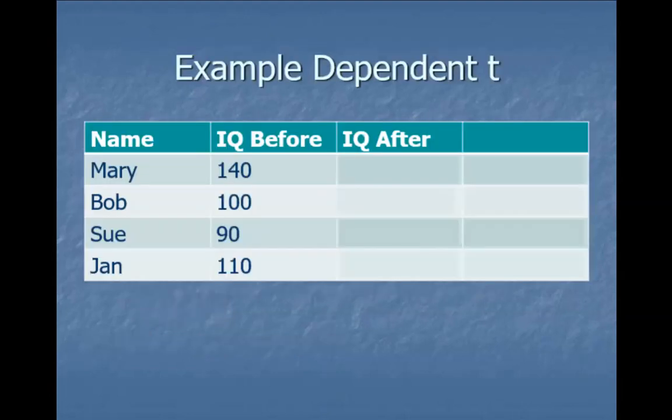I'm going to use this example to explain what we do with a dependent t. Let's say I recorded the IQ of four participants, then gave them an intervention — let's say vitamin K. I have no idea what vitamin K does, so don't consume it based on this pretend example. But let's say after the vitamin K, Mary's IQ goes to 150.